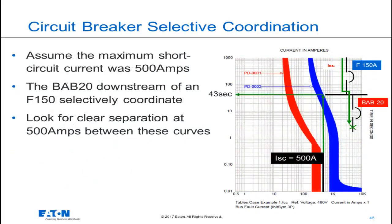Using this example of a BAB20 downstream of an F-frame 150-amp thermomagnetic circuit breaker, let's review how these two devices respond when the short circuit current flowing through them is 500 amps. 500 amps is into the instantaneous region of the BAB20, and so that device will trip instantaneously.